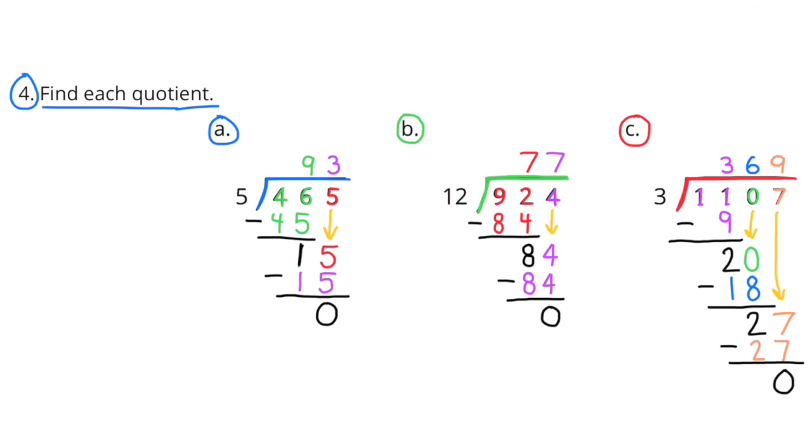B, 924 divided by 12. Well, 7 times 12 is 84. So, 70 times 12 would be 840. 924 minus 840 is 84. And I know that 12 times 7 is 84. 84 minus 84 equals 0. So, 924 divided by 12 equals 77.